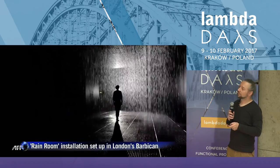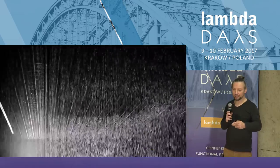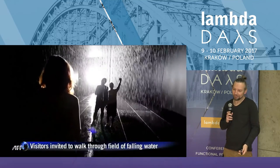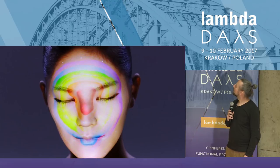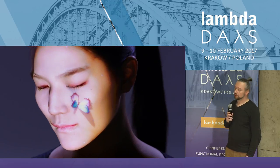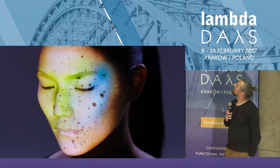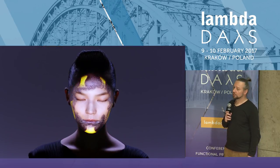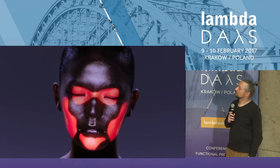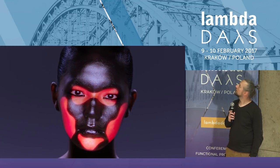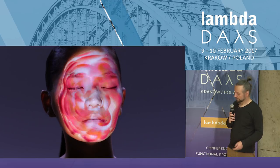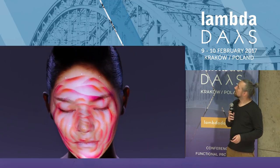This is a well-known example — a kind of rain installation. But if you go into the rain, the rain switches off above your head so you go through the rain with no wet at all. It's a strange experience. This is another example of creative coding with Intel — an interactive mask. There is big computer power behind because it's real-time face tracking. Depending on the expression of the face, the mask is changing.